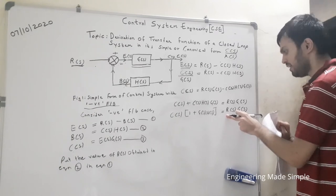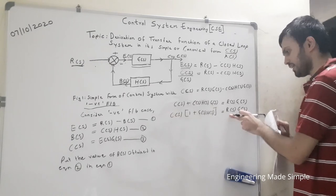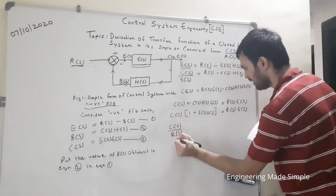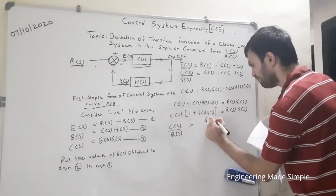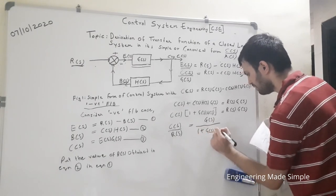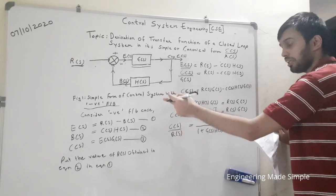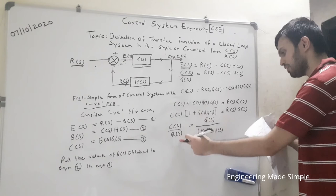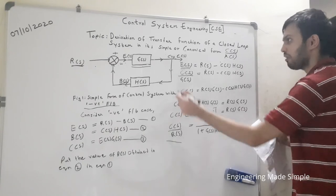Taking R(s) to the denominator, we can write the transfer function: C(s)/R(s) = G(s) / [1 + G(s) · H(s)]. Our derivation is now complete. This is the transfer function for a negative feedback closed loop system in its simple or canonical form.